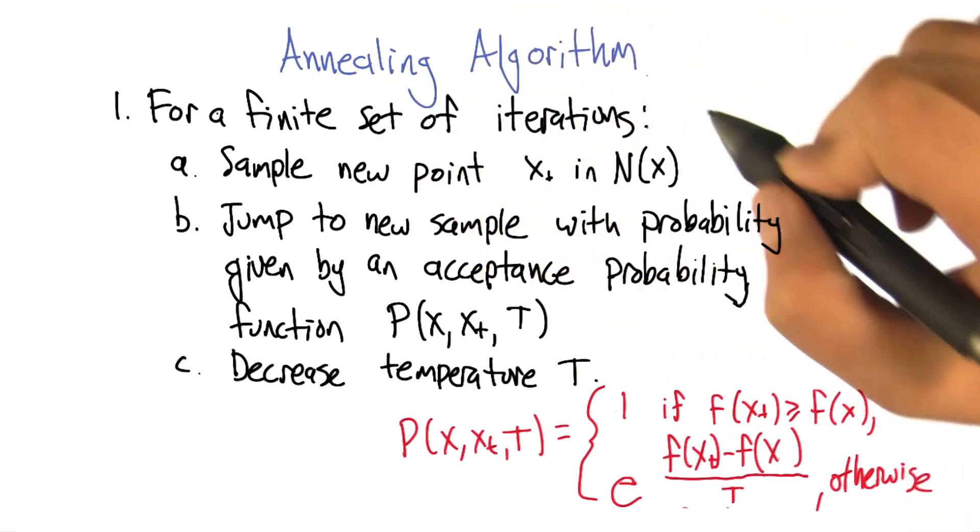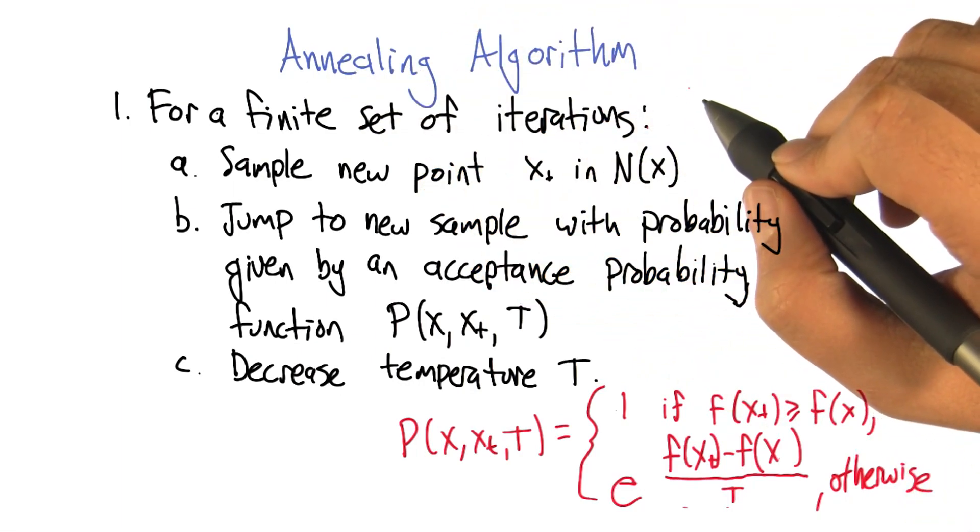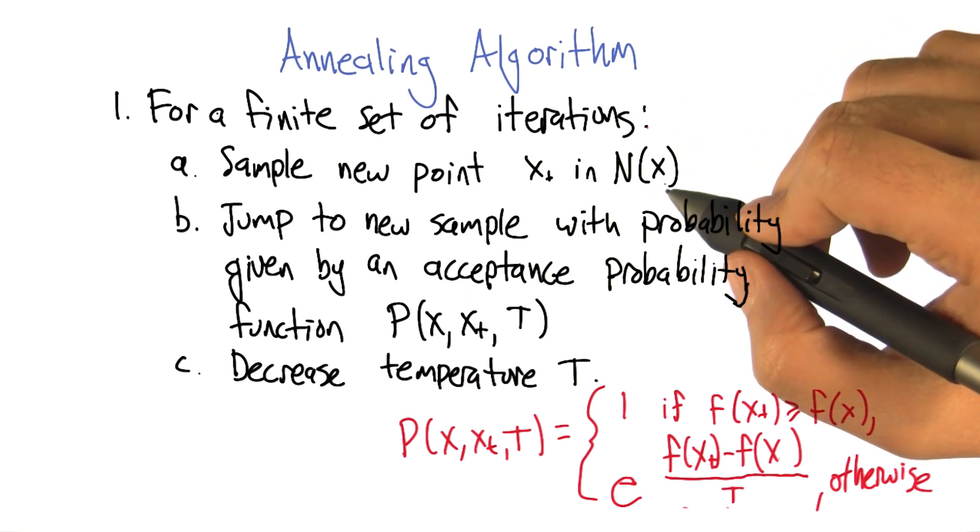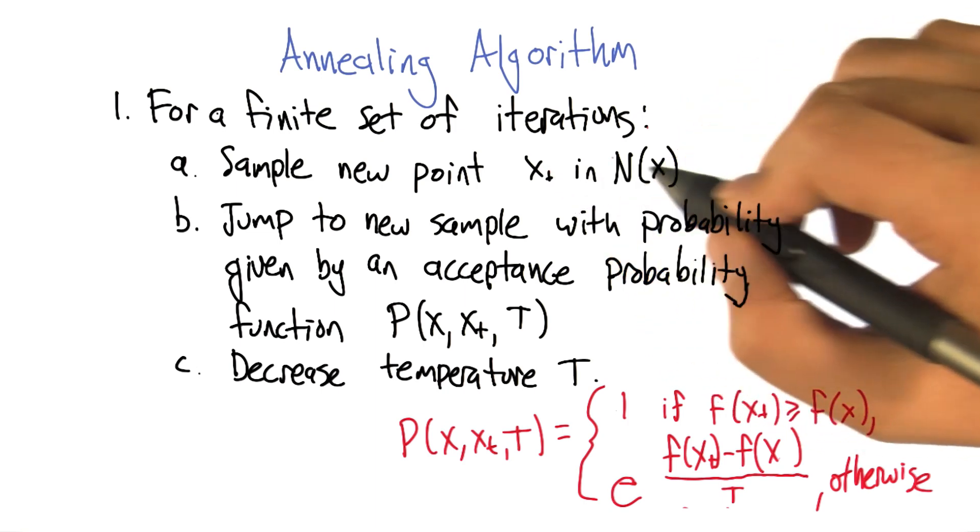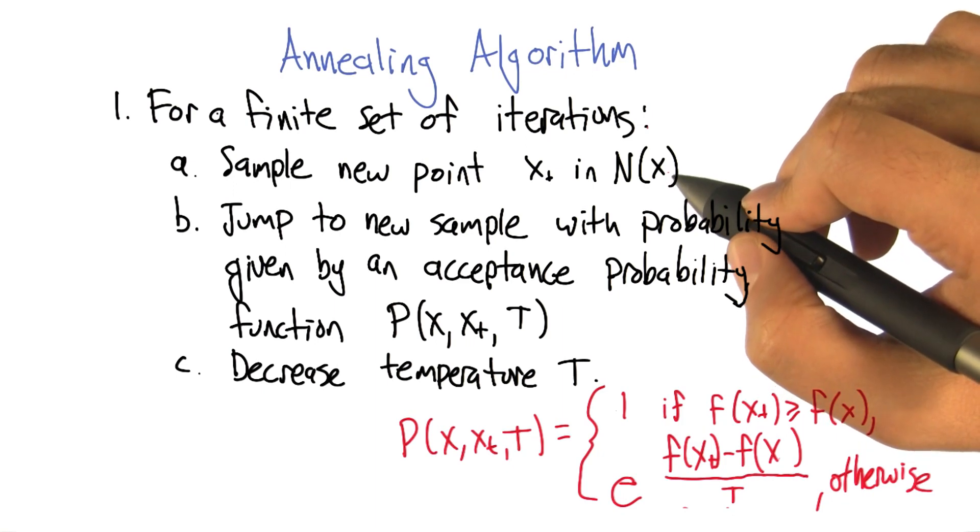We're going to repeat for some finite set of iterations. We're going to be at some point x, and we're going to sample a new point x_t from the neighborhood of x.